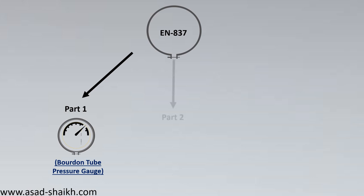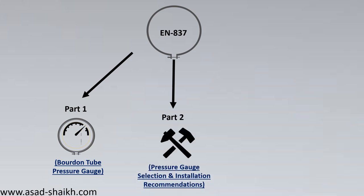EN 837 Part 2 deals with installation and selection. For very low pressure applications, you may need a diaphragm or capsule type pressure gauge; for medium to high pressure, a Bourdon tube is used. A proper table is provided recommending which type of pressure gauge to use at which pressure. It also covers different installation types — whether mounted on a panel, on a tee, dial size visibility, and more.